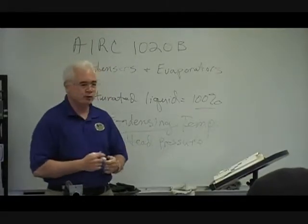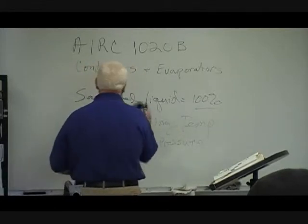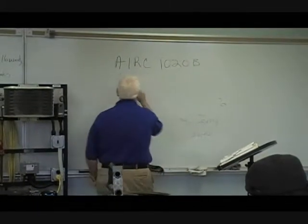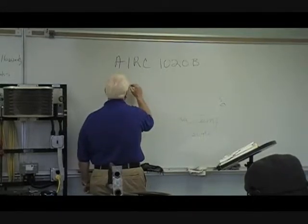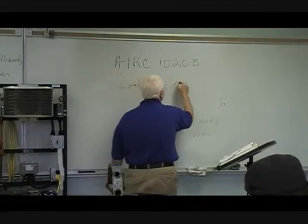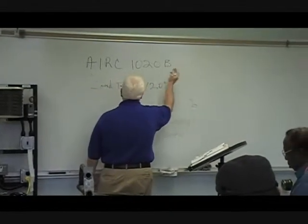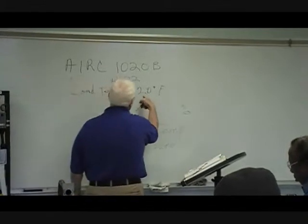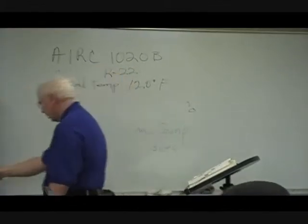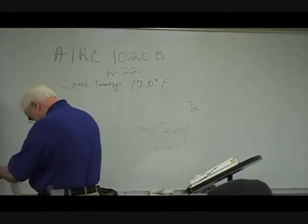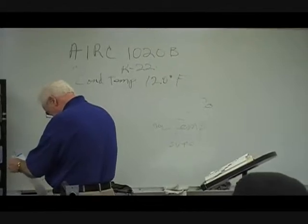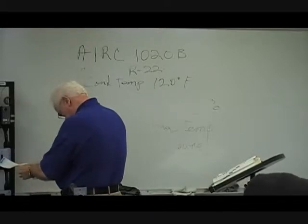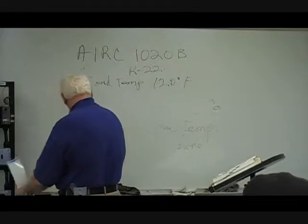Let's say you've got a condensing temperature of 120 degrees Fahrenheit, and you've got an R22 system. What is our pressure? We've got a 120 degree condensing temperature, let's find R22. That corresponds to a head pressure of 260 psi gauge.